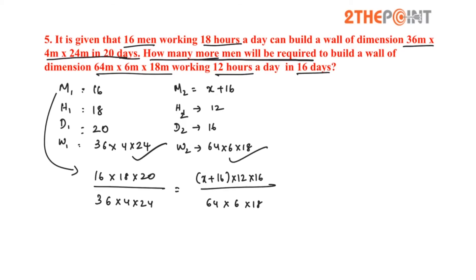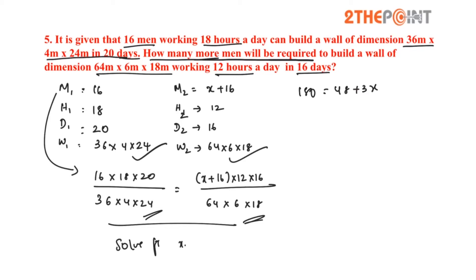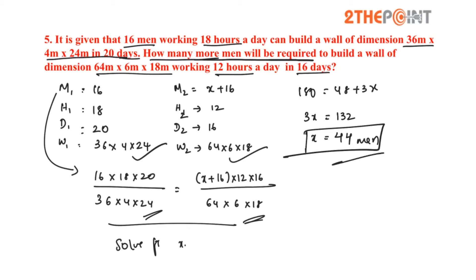Don't try to multiply the work dimensions as it gets complicated — keep the data as is. Writing directly: 16 × 18 × 20 divided by 36 × 4 × 24 equals (x + 16) × 12 × 16 divided by 64 × 6 × 18. Simplifying and solving for x: 180 equals 48 plus 3x, so 3x equals 132 and x equals 44. So 44 more men are required to build the wall.